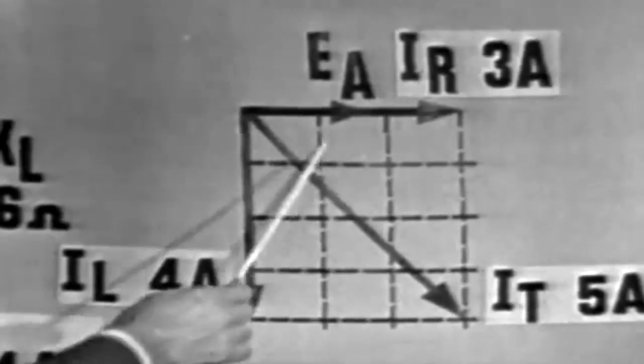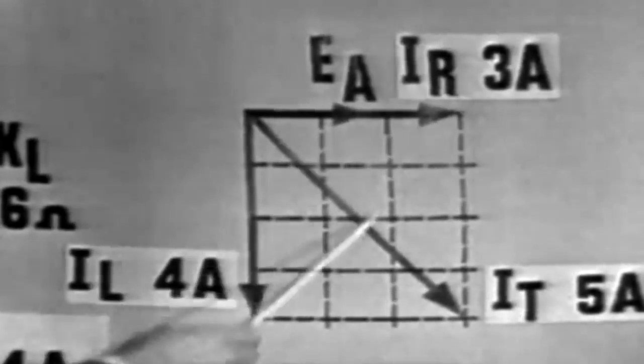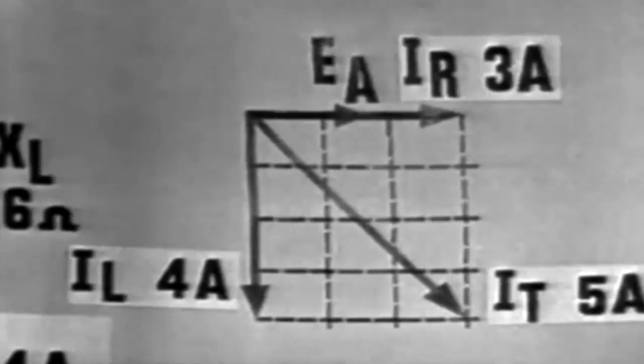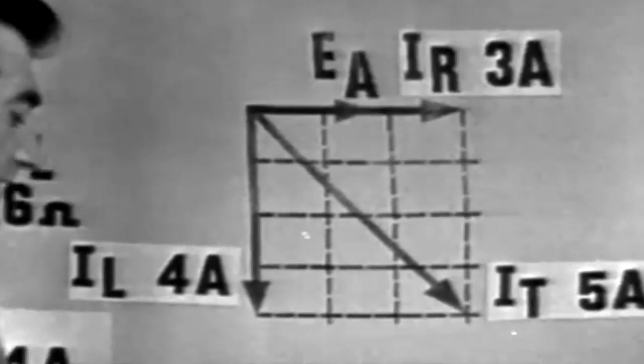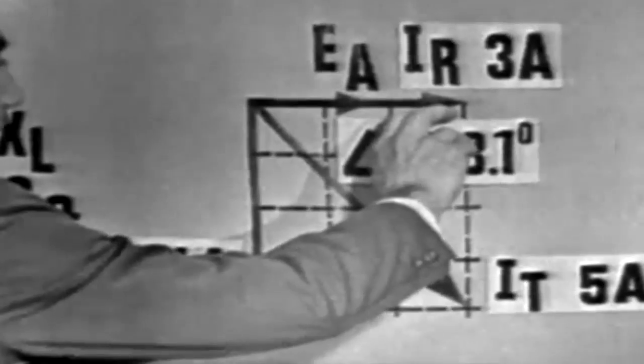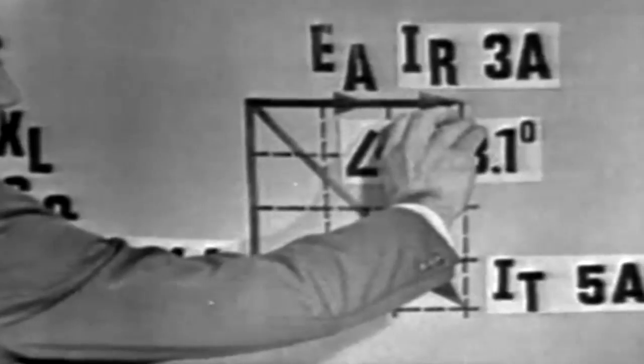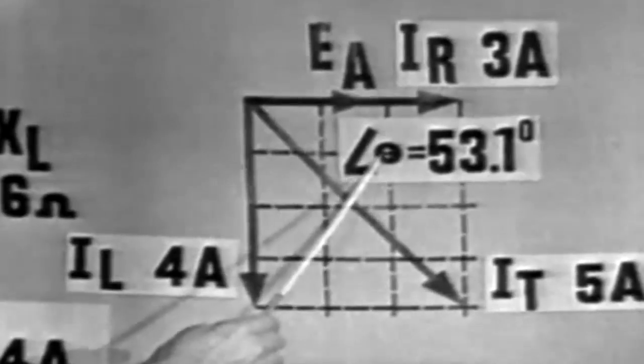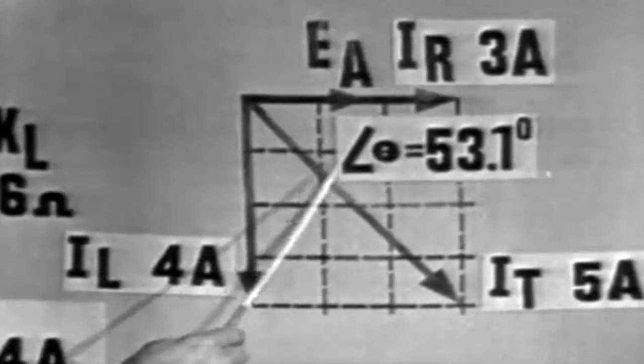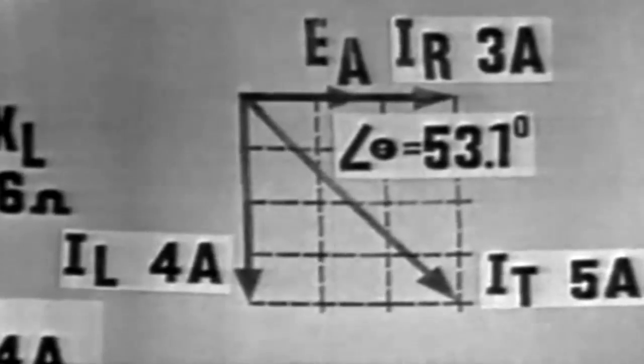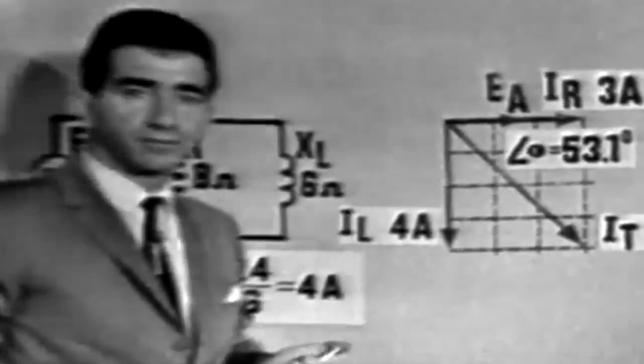Now, angle theta may be found by measuring the angle between EA and IT. In this case, if we were to measure the angle, we would find it to be 53.1 degrees. And notice now that angle theta, since this is an inductive circuit, is a negative phase angle, or a negative 53 degrees.